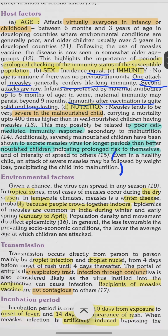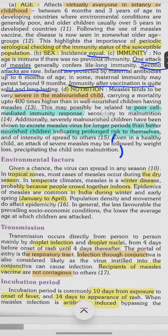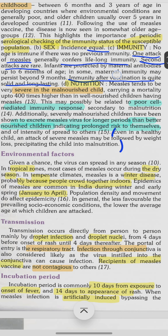No age is immune if there was no previous immunity. One attack of measles confers lifelong immunity, and immunity by vaccination is solid and long-lasting. Measles is severe in malnourished children due to poor cell-mediated immunity secondary to malnutrition.